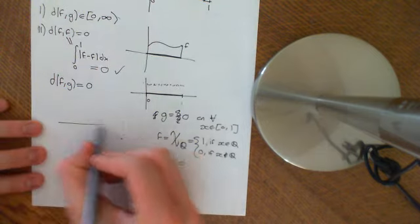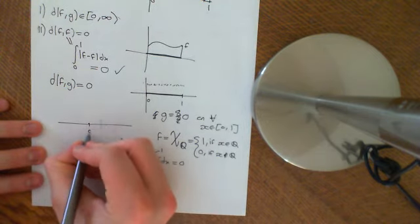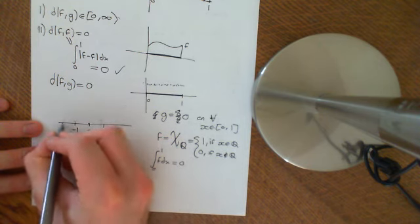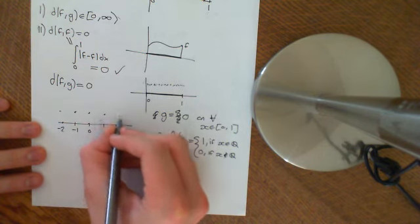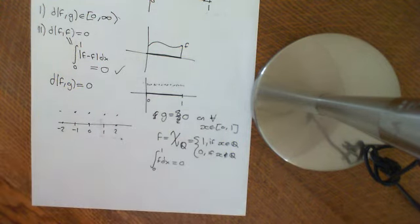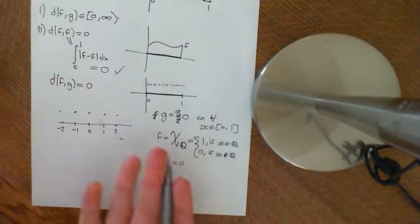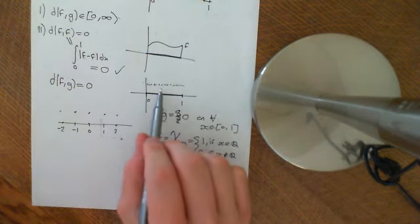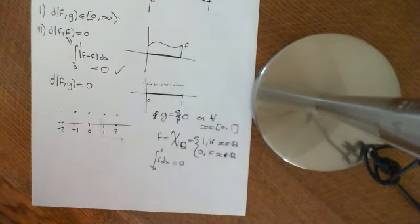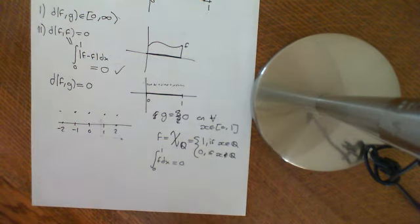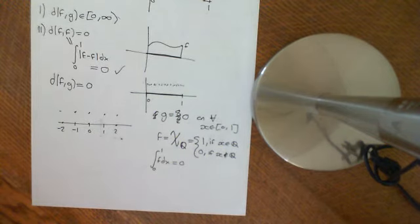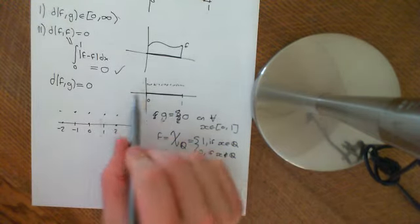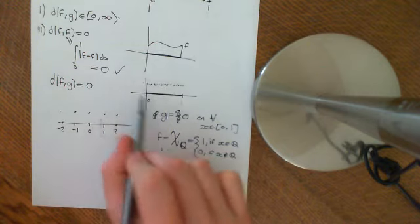It's analogous to defining a function equal to 1 at all integers and 0 elsewhere — integrating that gives nothing because it's just points with no area. The rationals are more subtle because they're dense — given any epsilon around any point you can find a rational within that epsilon neighbourhood — but the intuition for why the integral is zero is the same: countably many points have no area.